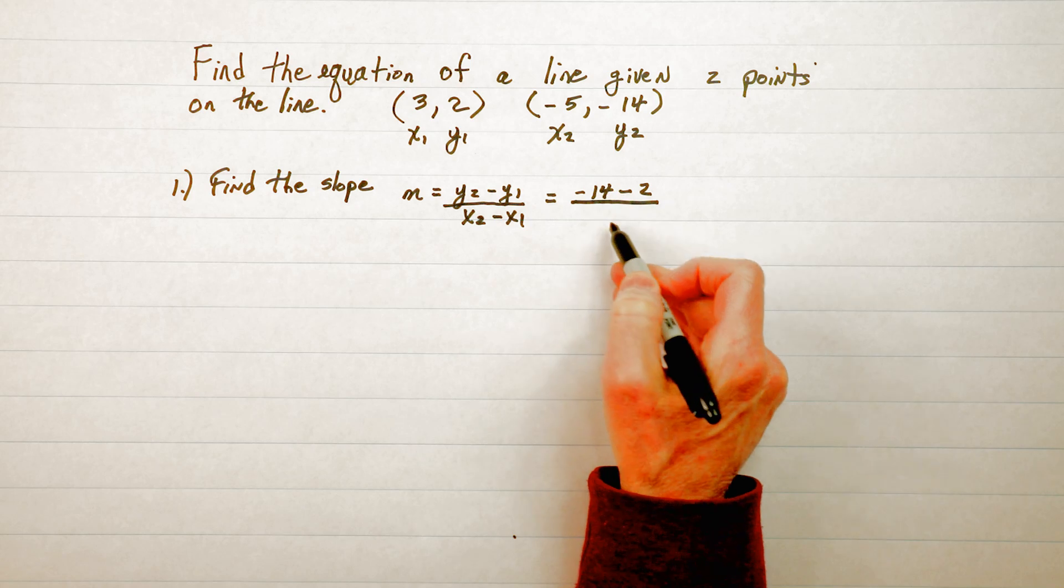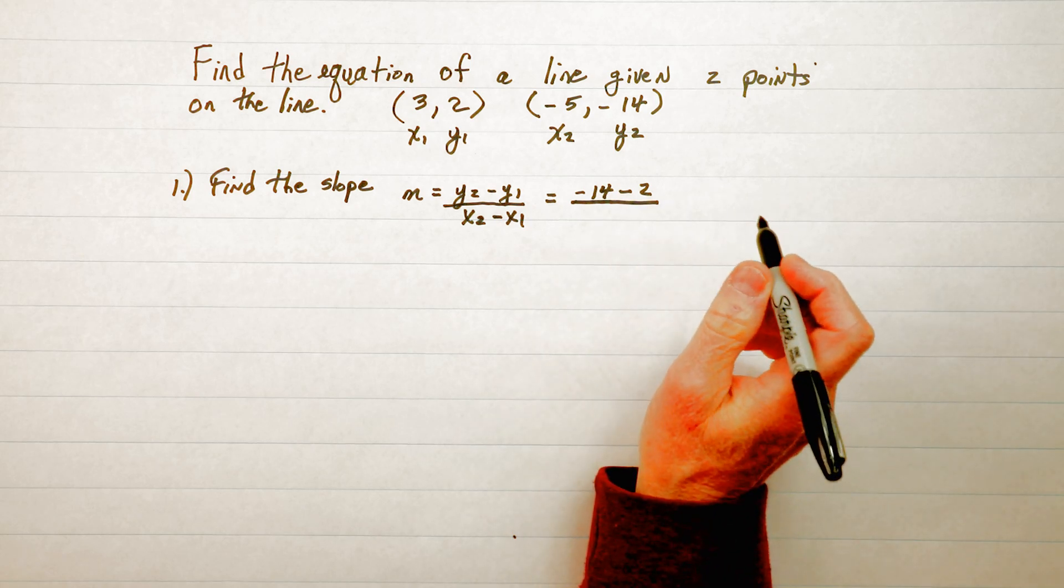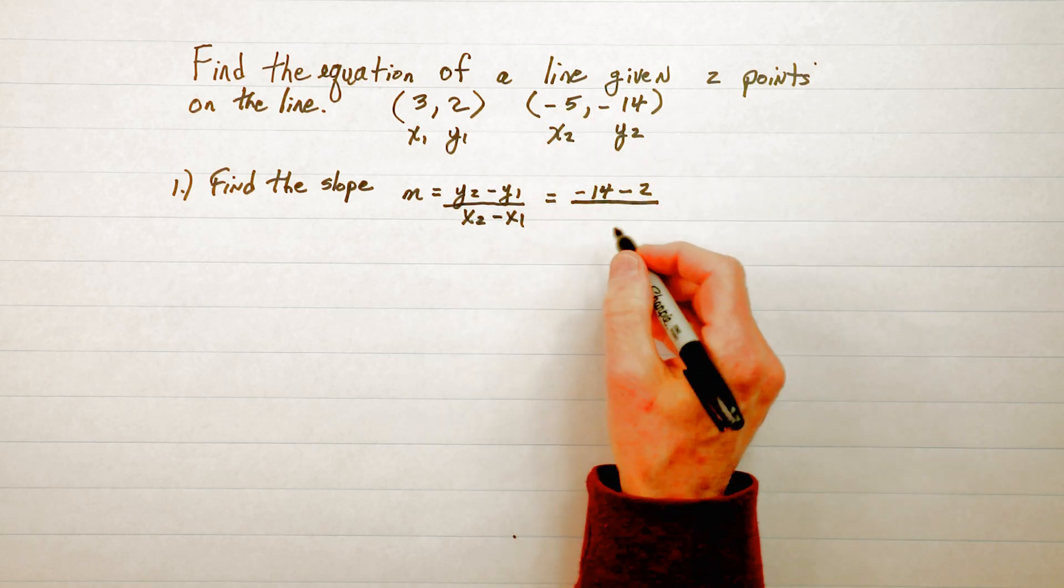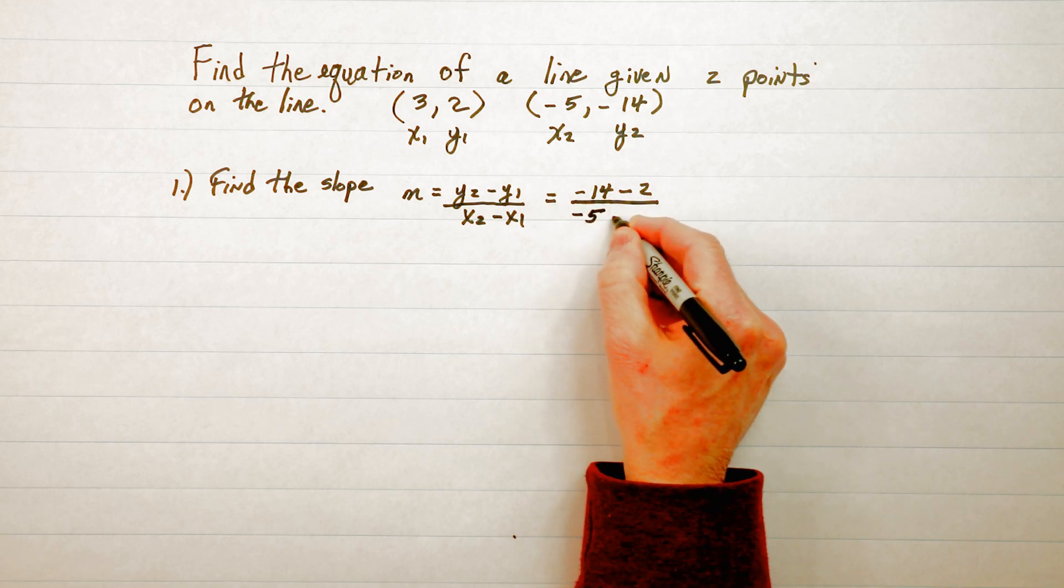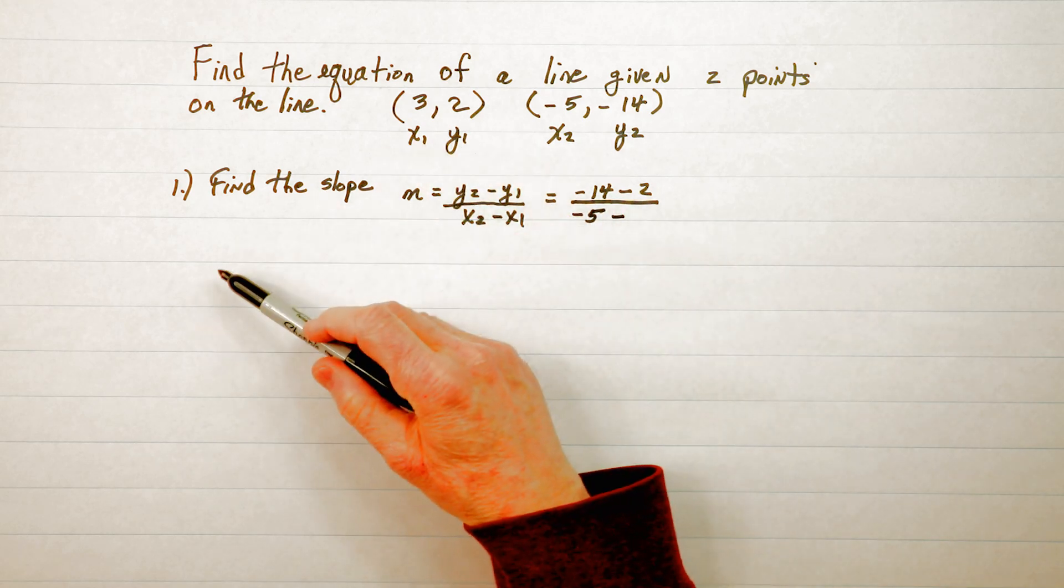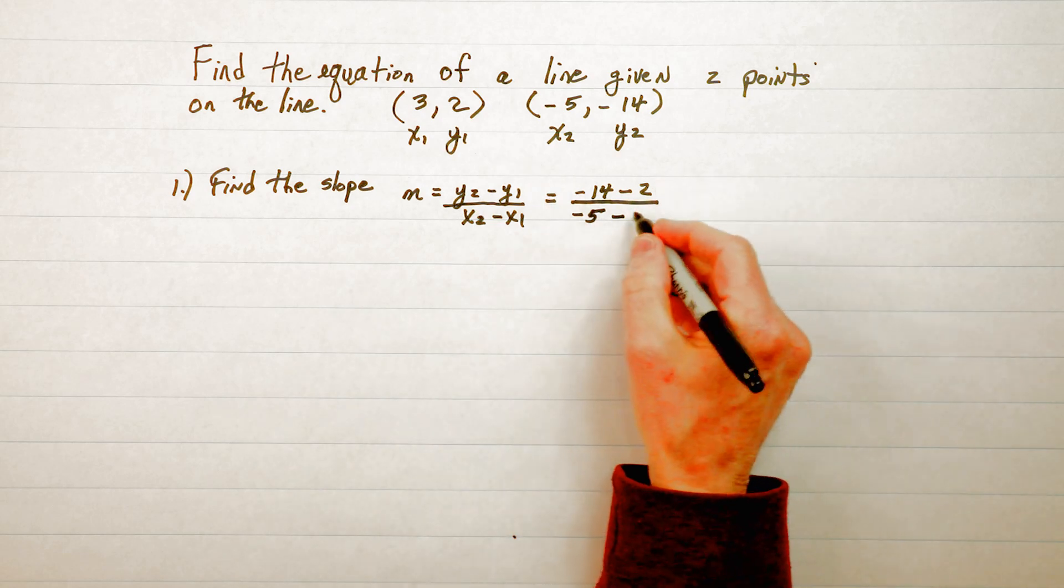So we have y₂ which is -14 subtract y₁ which is 2 and on the bottom we put the x numbers, it's always y over x for slope. X₂ is -5 so -5 goes there and we subtract x₁ which is 3.